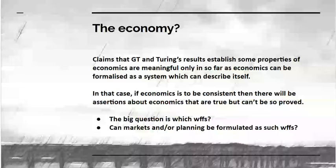If you're going to claim that Gödel's and Turing's results establish something about economics, this is only meaningful insofar as economics itself can be formalized as a system which could describe itself. Because Gödel and Turing's results are about formal systems capable of describing themselves. So is the economy a formal system capable of describing itself? If economics was consistent, then there will be assertions about economics that are true but can't be proven. But it's highly doubtful whether there are any such well-formed formula representing the economy that are self-describing. Can you formulate markets and planning as well-formed formula? Well, you can certainly formulate planning as such.